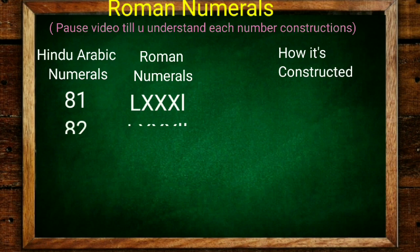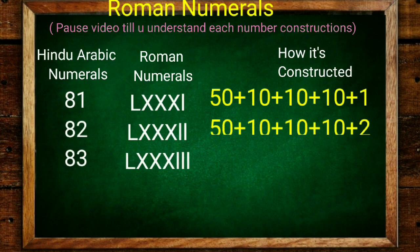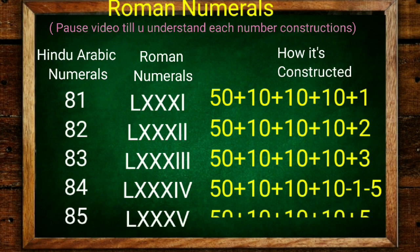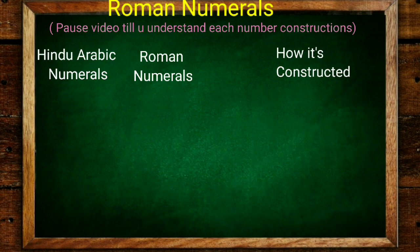Now go to 81: 50 plus 10 plus 10 plus 10 is 80 plus 1. 82, 83. 84 is 80 minus 1 is 79 plus 5, and 85 is normal: 50 plus 10 plus 10 plus 10 plus 5.